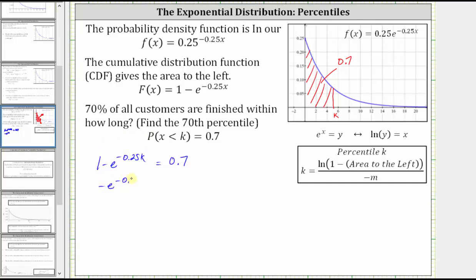Which gives us -e^(-0.25k) is equal to 0.7 - 1, which gives us -e^(-0.25k) equals -0.3.